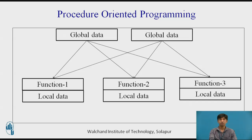Global data are more vulnerable to inadvertent change by a function. In a large program, it is very difficult to identify what data is used by which function. If we need to revise an external data structure, we also need to revise all the functions that access this data, providing an opportunity for bugs or errors to creep in. A serious drawback is that the procedural approach does not model real-world problems very well.